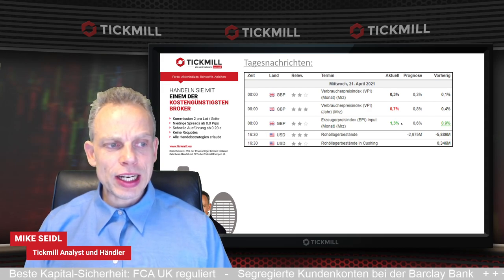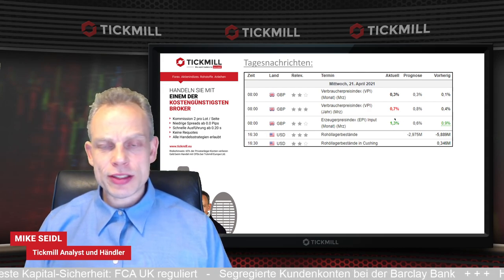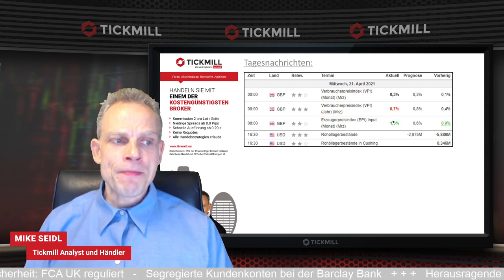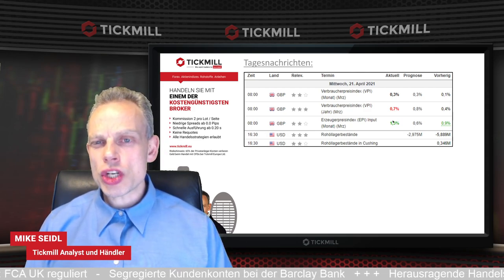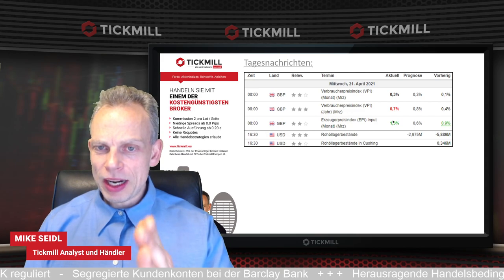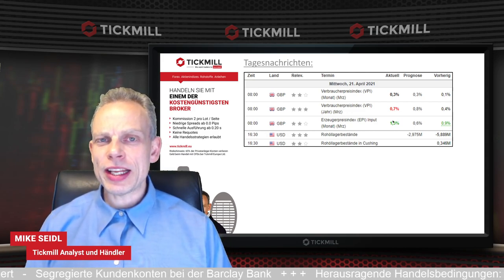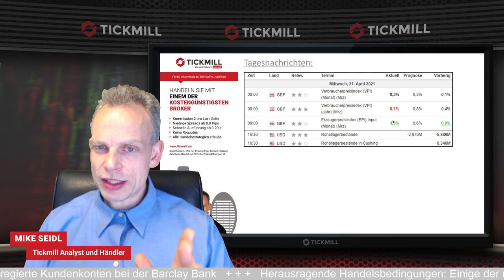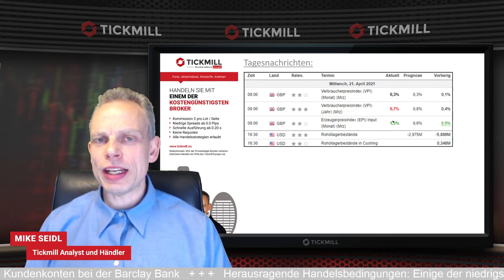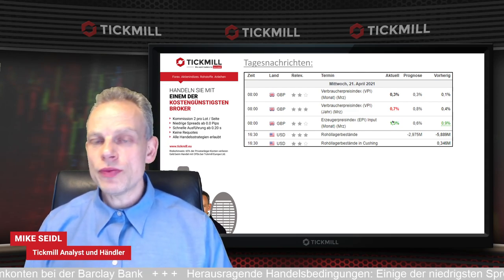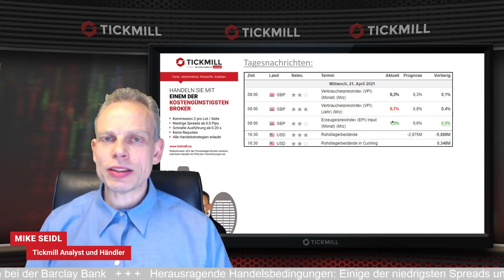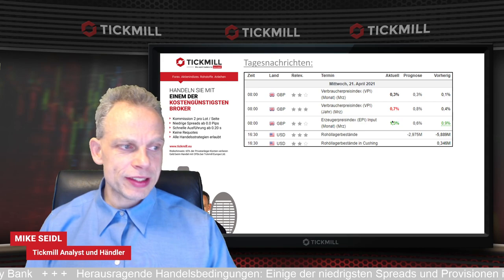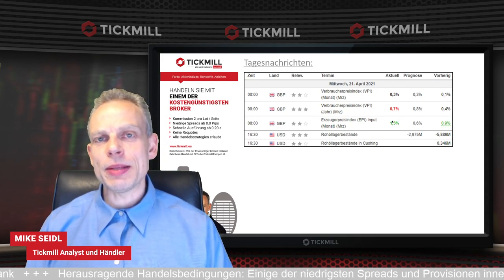Überraschend der starke Anstieg der Erzeugerpreise – da muss man sehen, wie man hier eine Mischung hinbekommt. Denn wenn die Erzeugerpreise zu stark steigen und diese Preise nicht an die Endverbraucher weitergegeben werden, ist das immer schlecht für die Unternehmen und hat einen negativen Einfluss auf die Entwicklung des Landes. Das ist das, was der Markt auch spielt, deswegen immer schön die Dinge miteinander kombinieren. Um 16:30 Uhr gibt es dann die Rohöllagerbestände aus den USA.